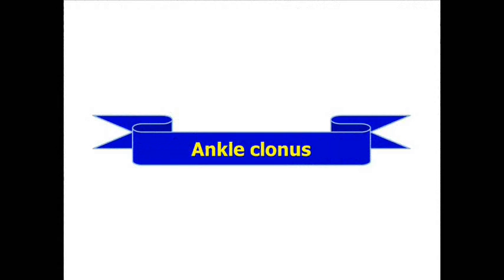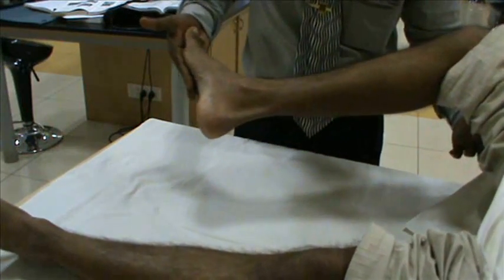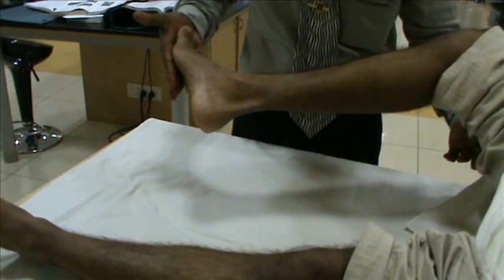An ankle clonus can be demonstrated by bending the patient's knee and supporting the leg with one hand, then briskly dorsiflexing the ankle. Arrhythmic oscillatory contractions can be noted. It is usually associated with upper motor neuron lesion.